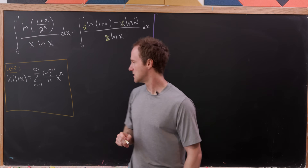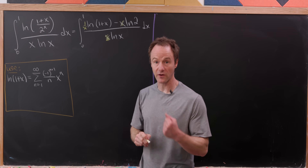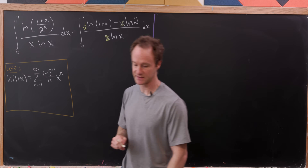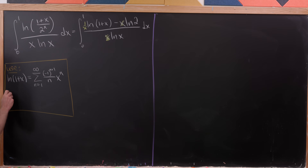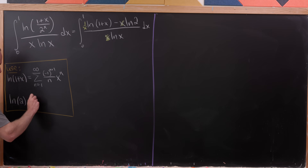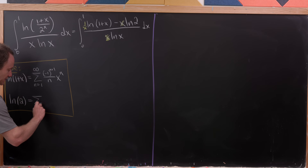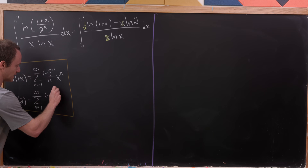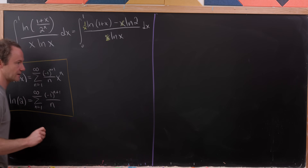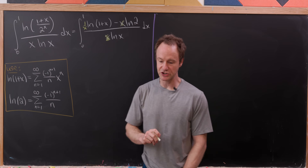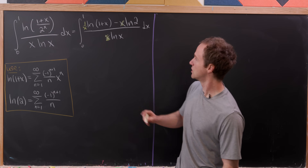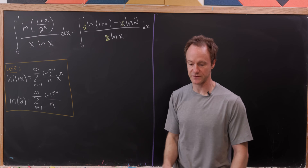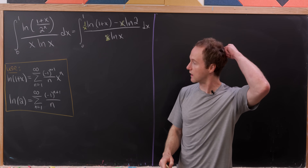This converges when x = 1 by the alternating series test, giving us ln(2) = the sum as n goes from 1 to infinity of (-1)^(n+1) / n. Now we'll replace ln(1+x) and ln(2) in our expression with those series.